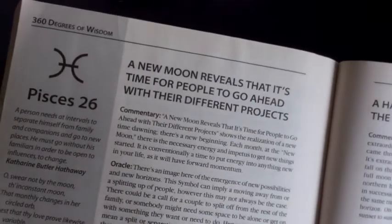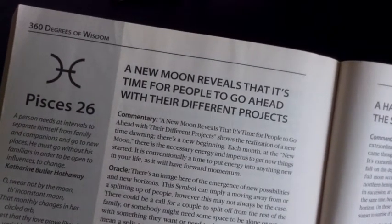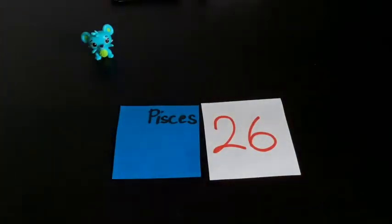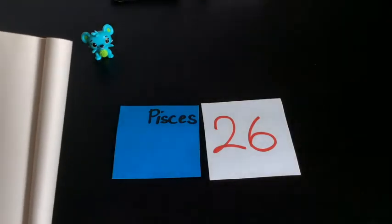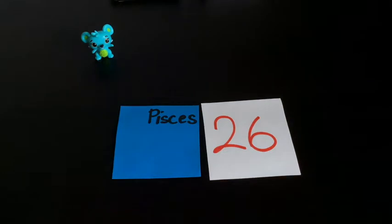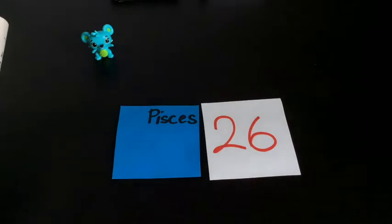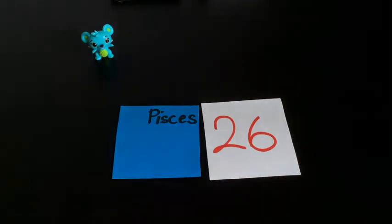A new moon reveals that it's time for people to go ahead with their different projects. The oracle reads: there's an image here of the emergence of new possibilities and new horizons. This symbol can imply moving away from or splitting up of people. However, this may not always be the case. There could be a call for a couple to split off from the rest of the family, or somebody might need some space to be alone.